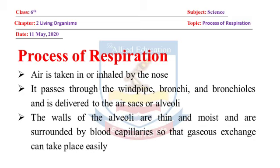Alveoli ki diwarein patli aur geeli hoti hain jinke gird blood vessels maujood hain taake gaison ka tabadla asani se ho sake. Jab hum naak ke zariye hawa ko inhale karte hain to woh windpipe yani trachea se guzarti hai, phir bronchi se, phir bronchioles se, aur is tarah hawai thaylion yani alveoli ko deliver karti jaati hai. Alveoli choti choti hawai thaylian hain jinki diwarein patli aur geeli hain aur inke gird blood capillaries hain taake gaison ka tabadla asani se ho sake.